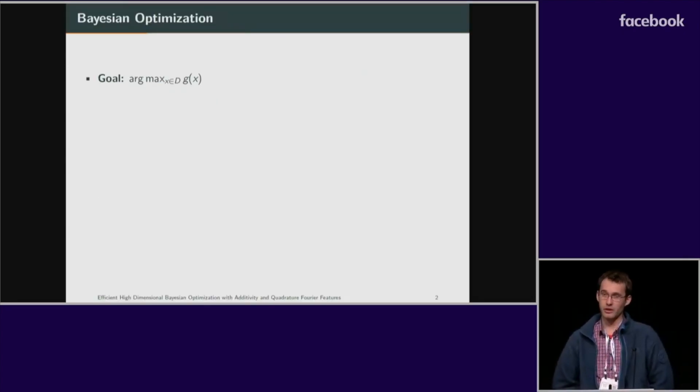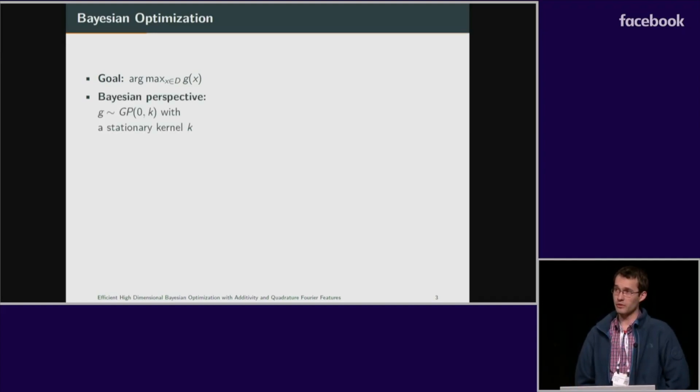We're interested in finding a global maximizer of a potentially nonlinear function g using only noisy zero-order oracle. We adopt a Bayesian perspective where we assume that the function g is sampled from a Gaussian process which encodes prior knowledge about the smoothness.